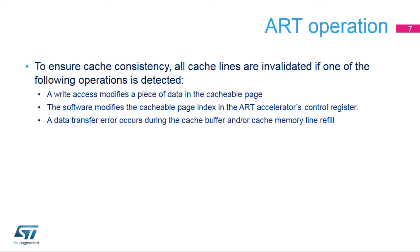The device incorporates a mechanism preventing software corruption due to cache inconsistency. It detects the above cases and flags all the cache memory lines and the cache buffer as invalid. As a consequence, the next cacheable accesses result in a cache miss, and so the cache line refills with new data.